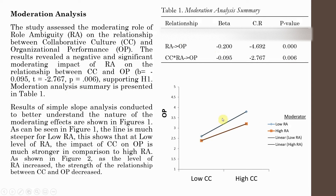Here is the simple slope analysis — a graph to visualize your moderation analysis. Results of simple slope analysis conducted to better understand the nature of the moderating effects are shown in Figure 1. As can be seen, the blue line — representing low role ambiguity — is much steeper, while the red line — representing high role ambiguity — is much flatter. The line is steeper for low RA, showing that at low role ambiguity, the impact of CC on OP is much stronger.